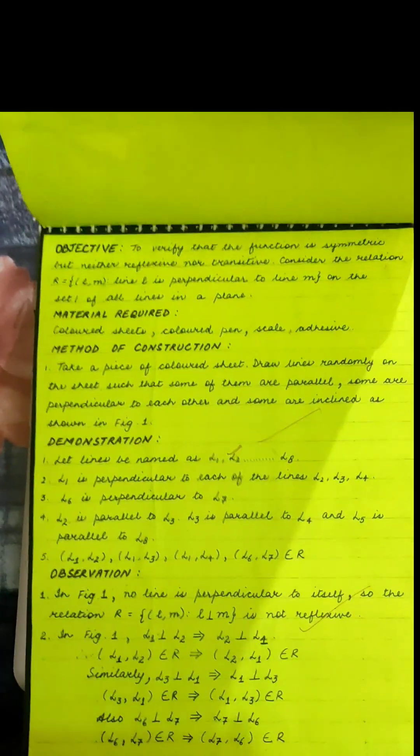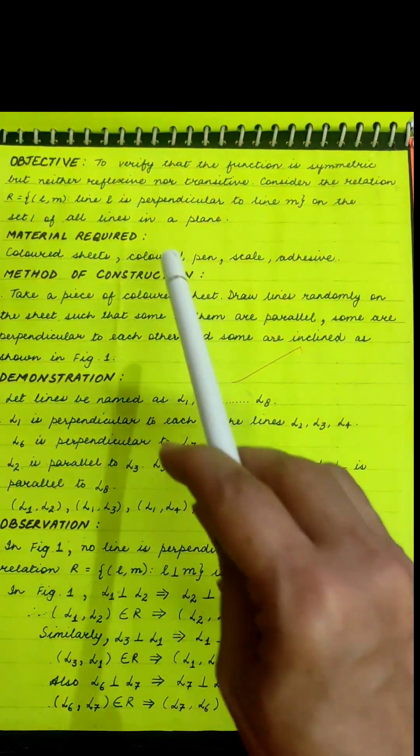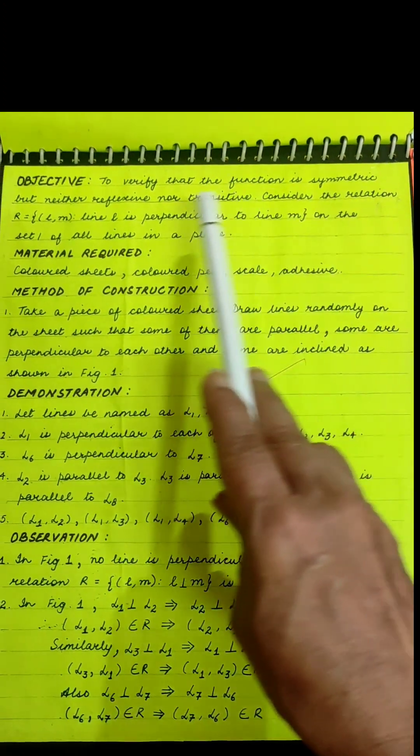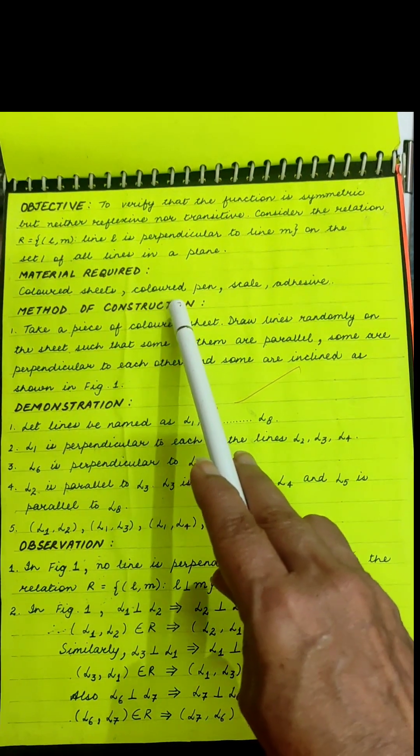The objective is to verify that the function is symmetric but neither reflexive nor transitive. Material required, the method of construction.